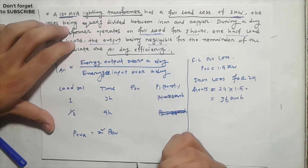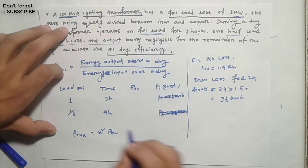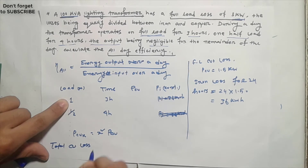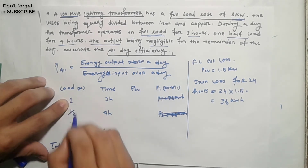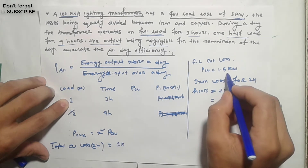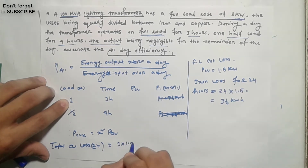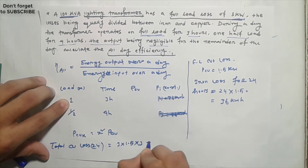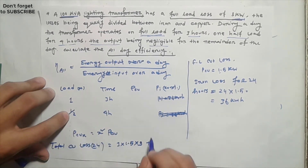Total copper loss calculation: using load type and x-squared, total copper loss is 1.5 times 1 squared for full load, plus 1.5 times one-half squared for half load, giving values of 1.5 and 0.375 respectively.